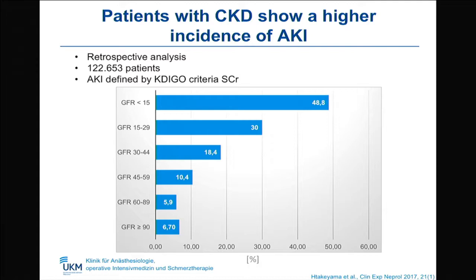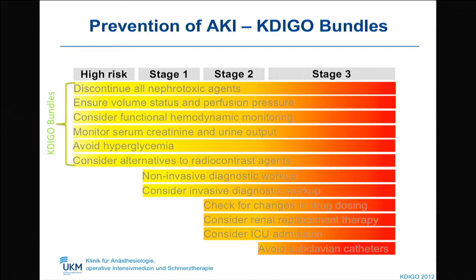Patients with chronic kidney disease also have a higher incidence of acute kidney injury. A retrospective analysis of more than 120,000 patients, where AKI was defined by serum creatinine criteria, showed that the lower the GFR, the higher the AKI incidence — about 50% in patients with GFR lower than 15 mls per minute. Therefore, one of the main issues in the perioperative period should be the prevention of acute kidney injury.